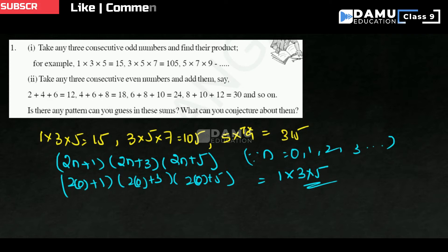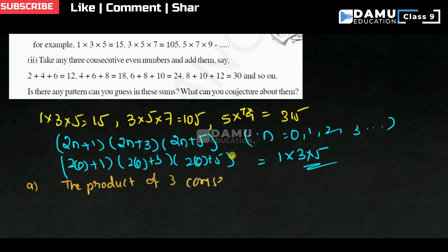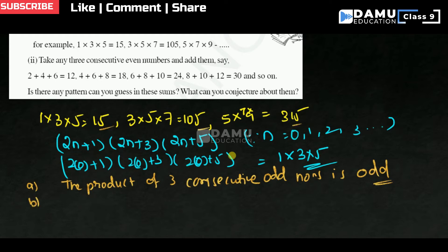So, is there any conjecture? Yes. The first conjecture: the product of any 3 consecutive odd numbers is odd. If you are multiplying the consecutive odd numbers, the product is also odd — for example 1×3×5 = 15, which is an odd number.